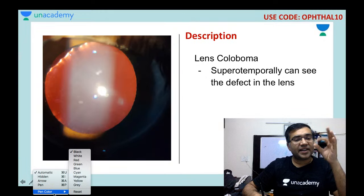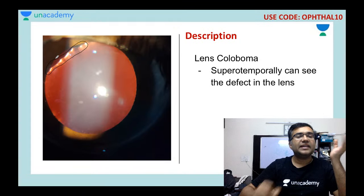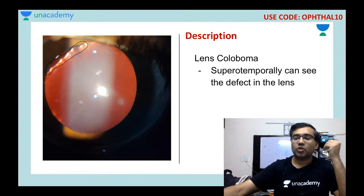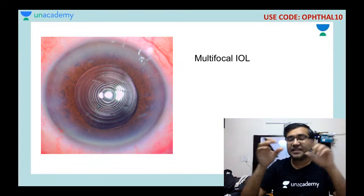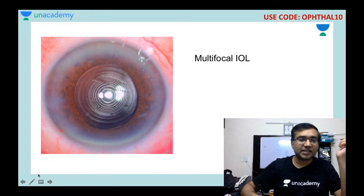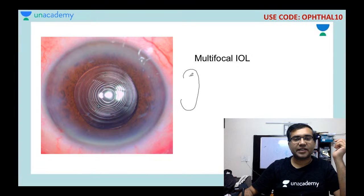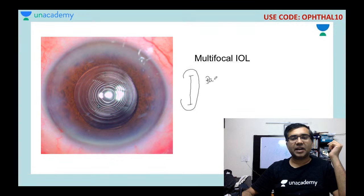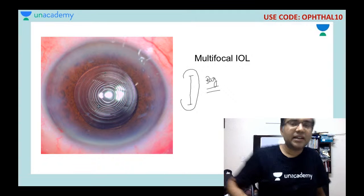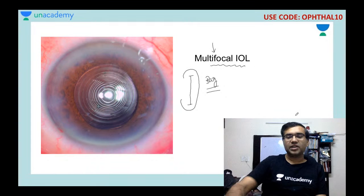Just as there can be a coloboma of the iris, there can also be a lens coloboma — a congenital defect where part of the lens is absent. After cataract surgery, the IOL is placed between the anterior and posterior capsule; this is called 'in-the-bag implantation.' The rings visible in the image identify this as a multifocal intraocular lens.